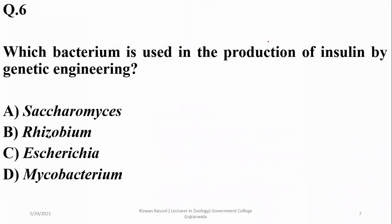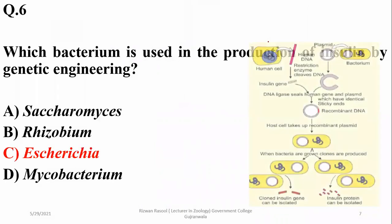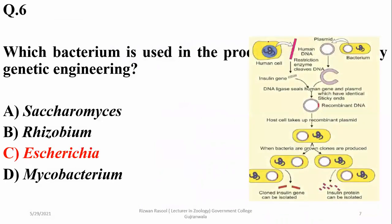Question number six: which bacterium is used in the production of insulin by genetic engineering? It is E. coli, which has been used commercially for the synthesis of insulin.